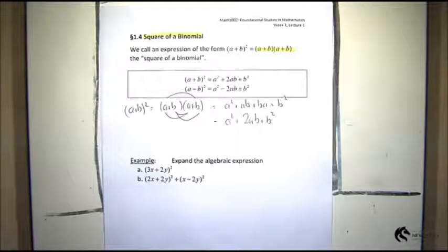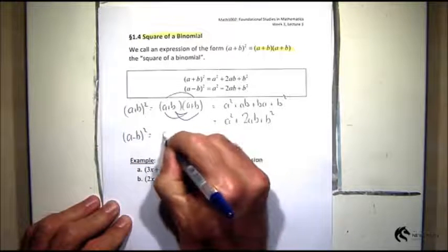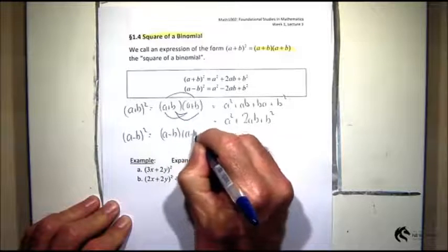And likewise, (a - b) all squared will be (a - b) times (a - b).